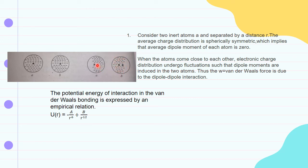A dipole is formed in each atom. The electron cloud is displaced, meaning there is a fluctuation in the electron charge distribution. As a result, a dipole is formed, and the interaction between the two atoms becomes a dipole-dipole interaction.